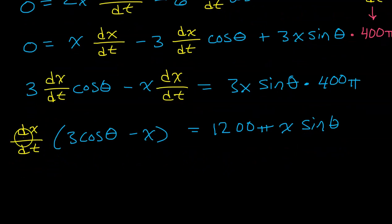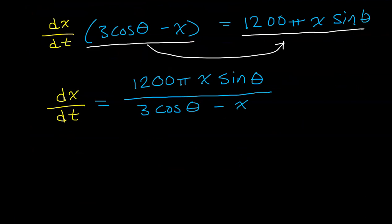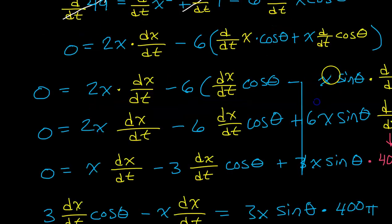It is time to get the dx dt by itself by dividing both sides by 3 cosine negative x. So, basically, I'm going to take this entire thing and I'm going to put it right there. So, that brings us to this point in the story right here. But there's one piece of information that we have not quite used yet.